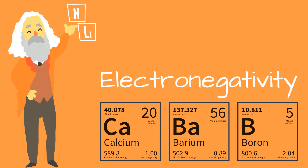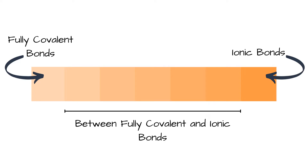In the last lesson, I told you that there is a little bit more to covalent versus ionic bonding than we cover in year 10 and 11. This is due to something called electronegativity. Covalent through to ionic bonding should be thought of as a continuum, going from fully covalent through to fully ionic bonds, with most bonding sitting somewhere between the two.